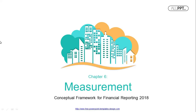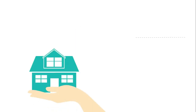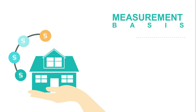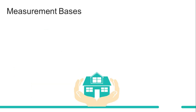Welcome to the lengthiest chapter in the whole framework — Chapter 6: Measurement. In the previous chapter we talked about recognizing an element of the financial statements. In this chapter we're going to talk about the amount that we measure a recognized element with. This would require a selection of what we call a measurement basis.